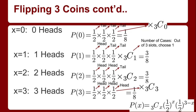So the probability formula is 3 choose x, times one-half to the x, times one-half to the 3 minus x. In this case it's really just one-half to the 3, but we're separating the halves that are heads and the halves that are tails. The 3 minus x represents the remainder — if we have one head, we're going to have two tails — so there are always three fractions multiplied together. The 3 choose x gives the number of cases.